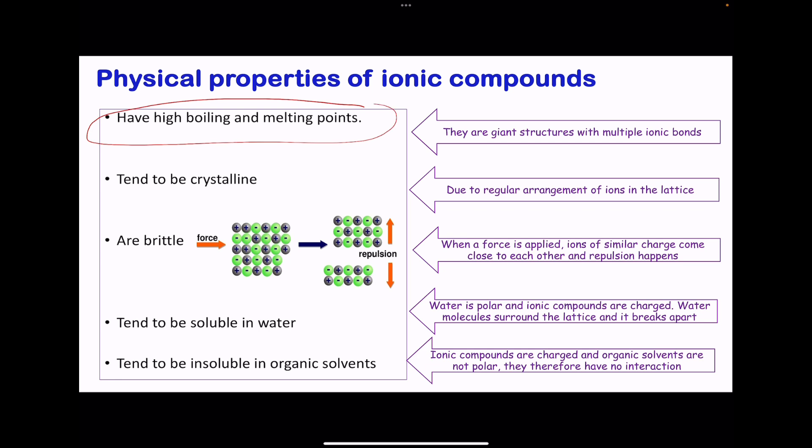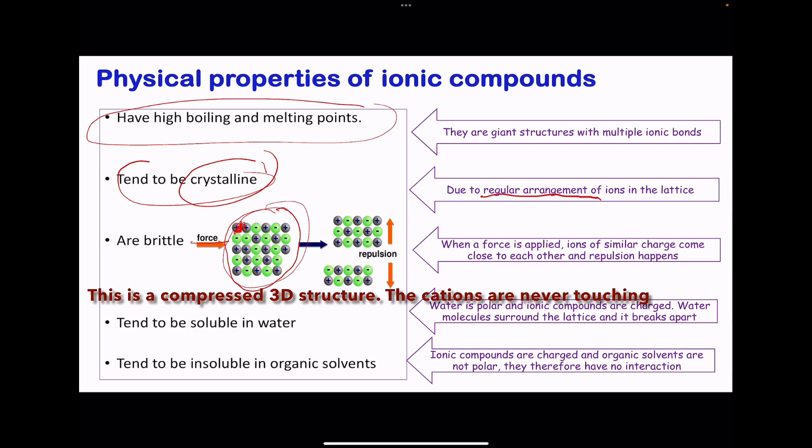Ionic compounds tend to be crystalline. We saw already they have regular arrangement of the ions in the lattice, and because there are many, they can precipitate out of solution and crystals can be seen. Ionic compounds are brittle. If a force is applied, the structure is going to slide over. In the actual ionic structure, cations cannot be together because they will repel each other. Because the structure is in layers, when a force is applied, it's going to slide over and the positive ions are going to be closer to each other. Repulsion is going to occur and the structure is going to break apart.